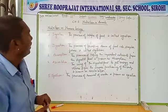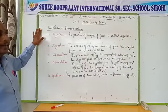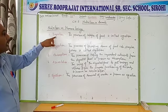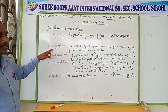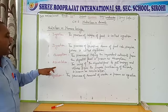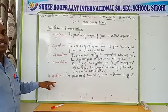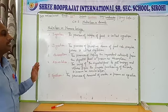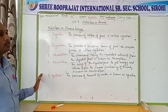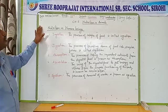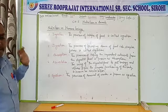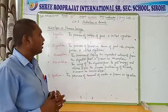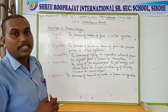So nutrition in human beings takes place in five steps. What are these five steps? Ingestion, digestion, absorption, assimilation, and egestion. These are the five steps through which the food is digested, consumed, and from that nutrition takes place in human beings. Now with the help of a diagram, we will see how nutrition takes place in our body.